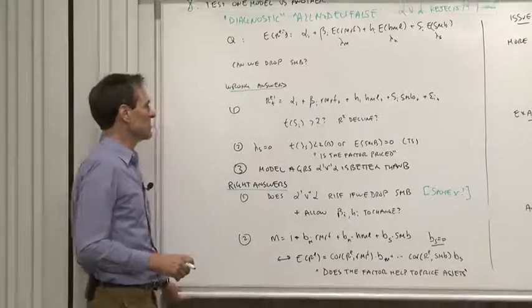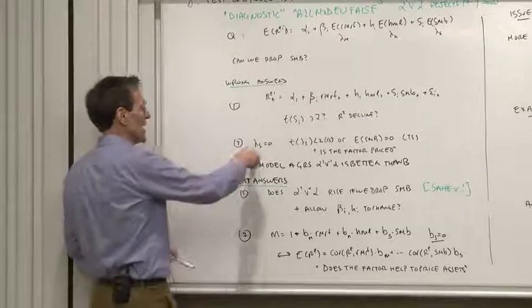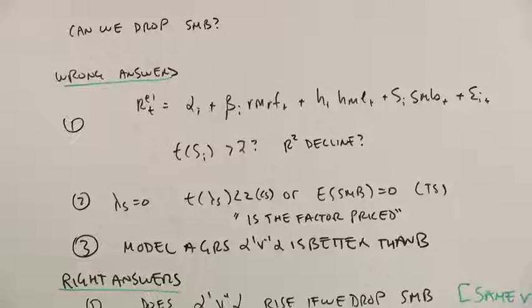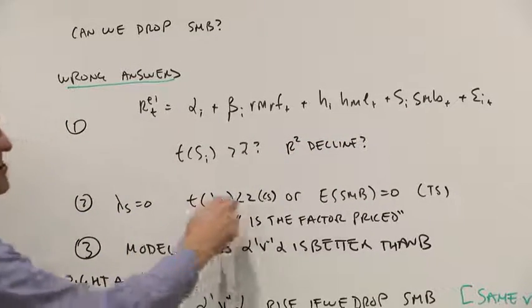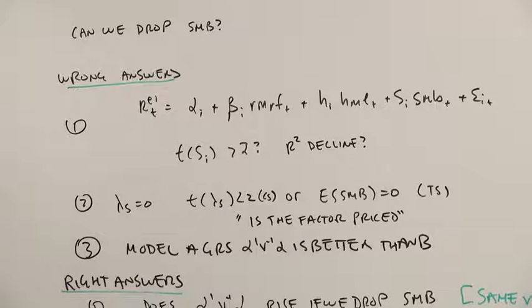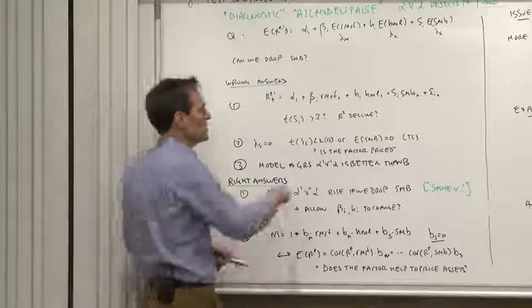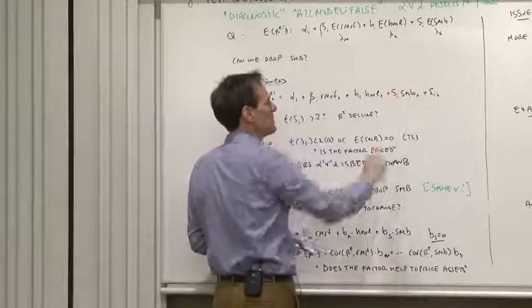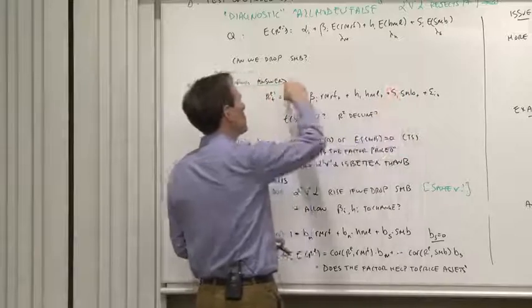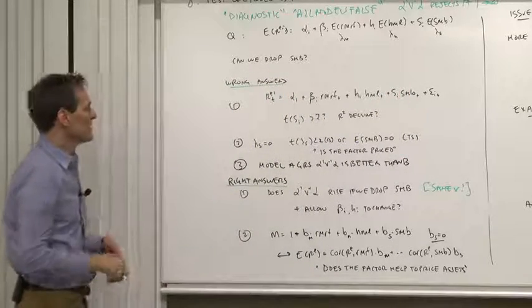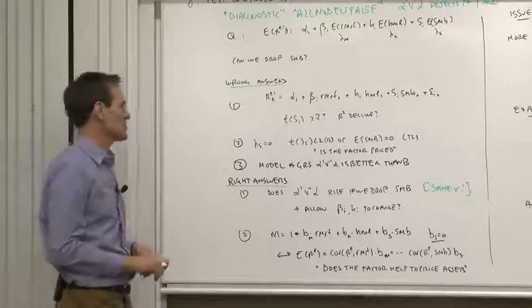Another common way to do this wrong is to look at the lambdas. Is the factor risk premium for SMB small? Is the T for the lambda less than 2 in a cross-sectional regression? Is the expected value of SMB equal to 0 just looking at the time series? In words, is the factor priced? Well, that's wrong too, because it's quite easy for the mean of SMB to be positive, but SMB, dropping SMB doesn't do anything to affect your ability to price other assets, which is what we're after.